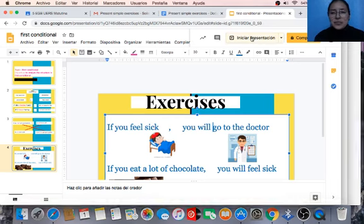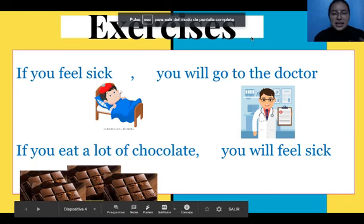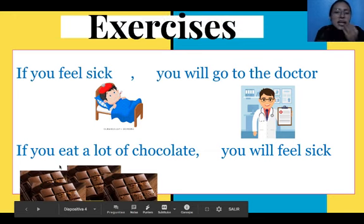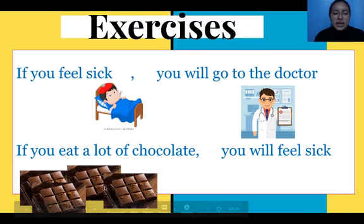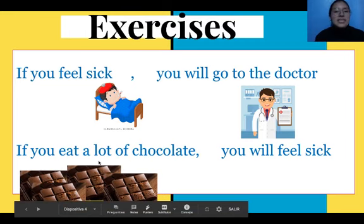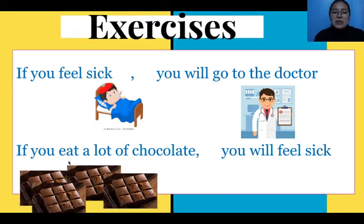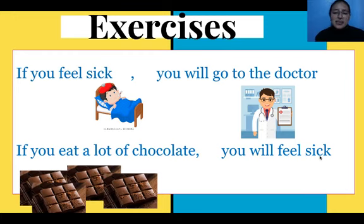Continue. 'If you eat a lot of chocolates' — 'eat' means 'comer' — 'if you eat a lot of chocolates, comma, you will feel sick.' This is our result in the First Conditional.